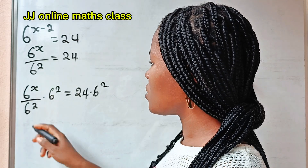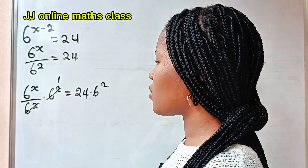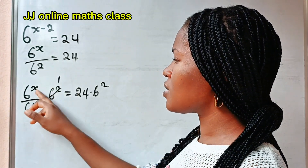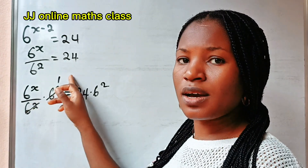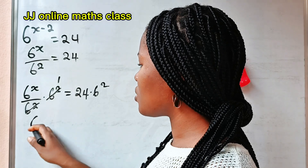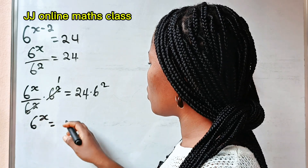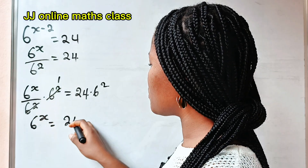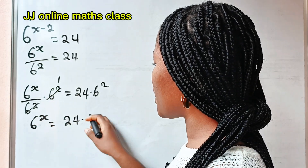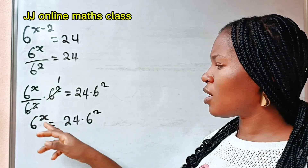Now, 6 to the power of 2 will divide itself to give us 1. So 6 to the power of x times 1 gives us 6 to the power of x is equal to 24 multiplied by 6 squared.